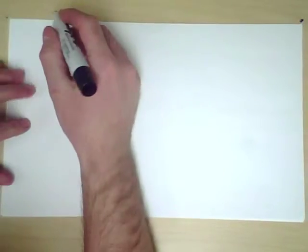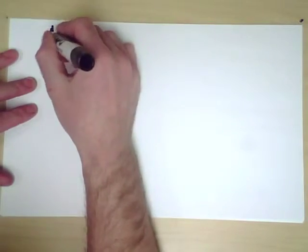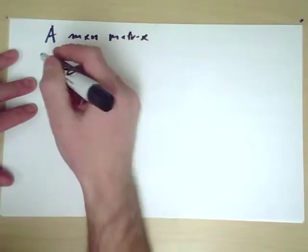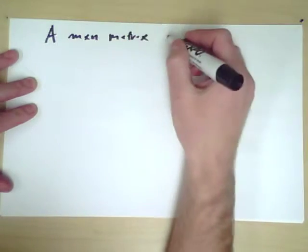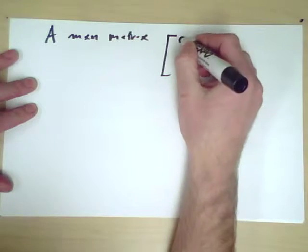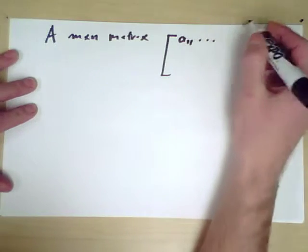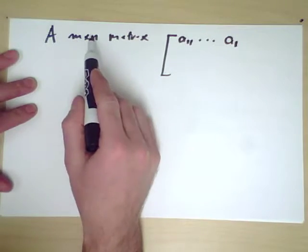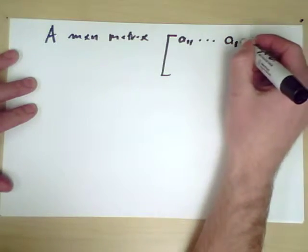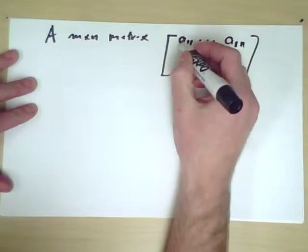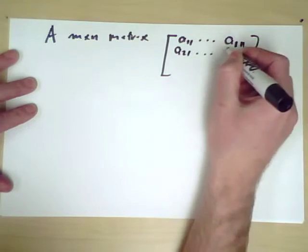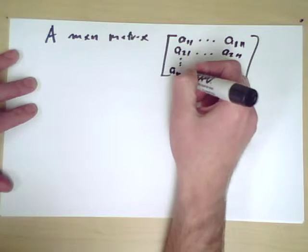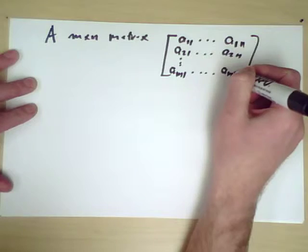So let's suppose that since A is an m by n matrix, that it has entries like this: a_11 up to a_1n, then a_21 up to a_2n, and so on to a_m1 up to a_mn.